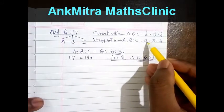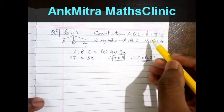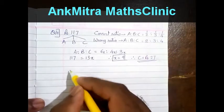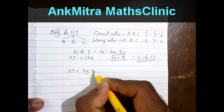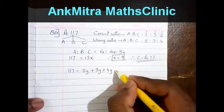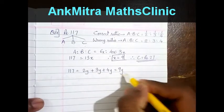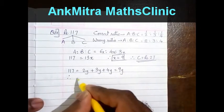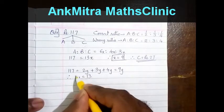In the second case, the ratio is 2:3:4. Applying a common multiplier y, we write 117 = 2y + 3y + 4y, which equals 9y. Therefore y = 13.